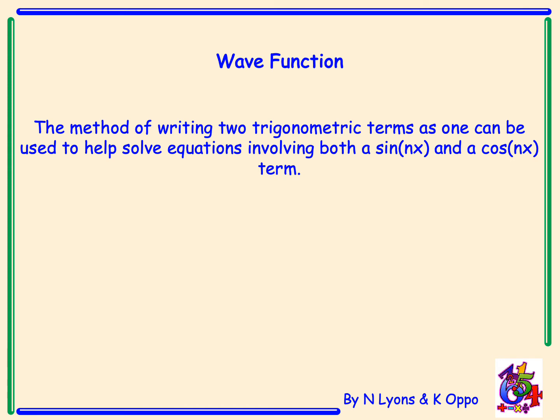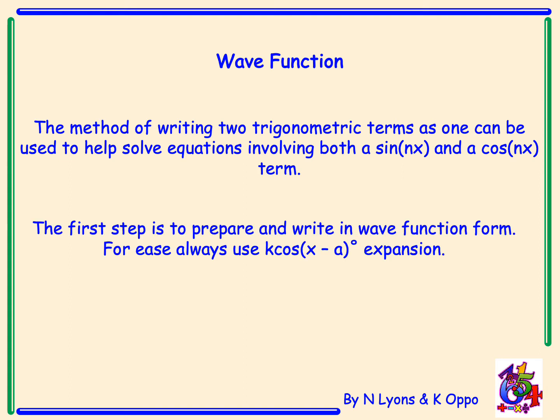The method of writing two trig terms as one can be used to help solve equations involving both a sine and cosine term. The first step is to prepare and ensure we write it in wave function form, and for ease always use k cos of x minus a expansion.